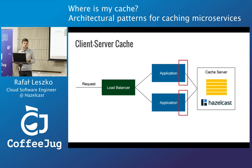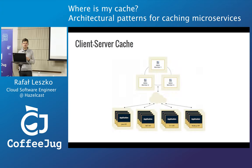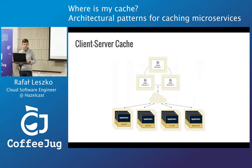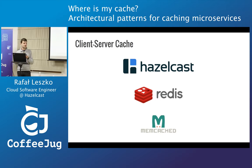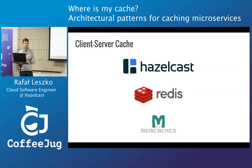This is a very common strategy for microservices — you set up a cache server and have microservices written in different programming languages that can still all use this cache. That is such a common approach that a lot of alternative solutions like the most popular Redis, or used to be most popular Memcached, only offer client-server mode because they are written in C, so you cannot embed them easily in anything.